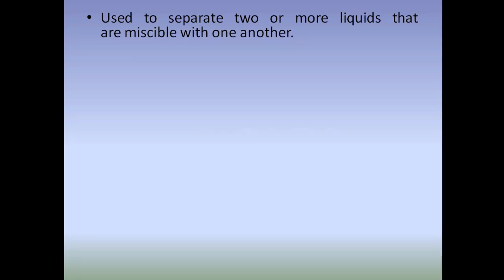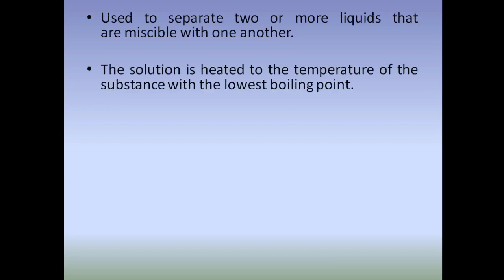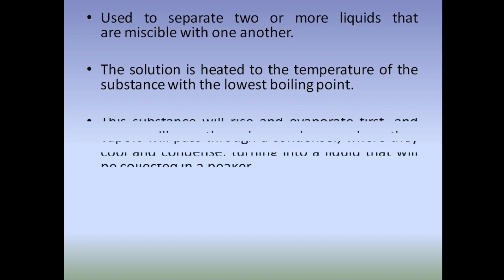The last method is fractional distillation. The difference between simple and fractional distillation is that in simple distillation we can only separate a mixture containing two liquids, but in fractional distillation we can separate two or more miscible liquids. For example, ethanol and water, or acetone and water, can be separated using fractional distillation. The solution is heated to the boiling point of the substance with the lowest boiling point — for ethanol and water, the mixture is heated to around 70°C and ethanol is collected first.